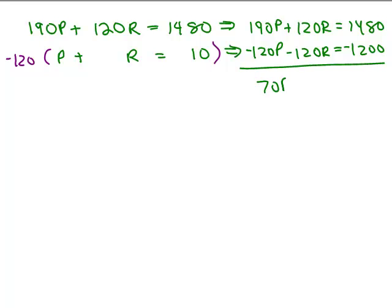And that gives you 70P. These cancel right here, the 120R minus 120R. And I get 280 divided by 70, I get P equals 4.